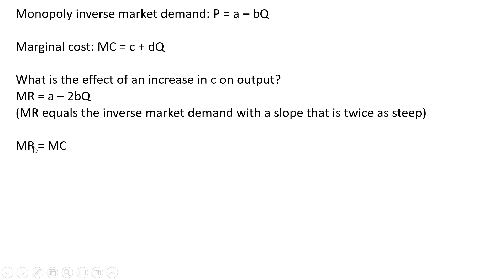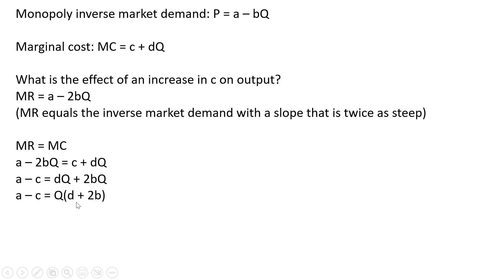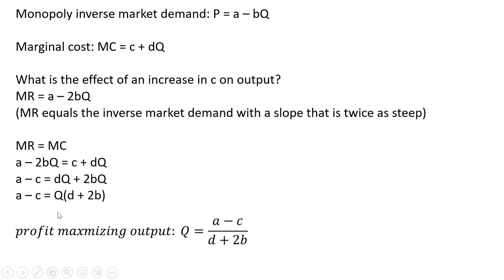Now we're going to profit maximize by setting marginal revenue equal to marginal cost, and we're going to solve for Q. Moving some things around — subtracting C from both sides and adding 2BQ to both sides. Now let's factor out a Q term on the right-hand side, and divide through by (D + 2B). That gives us our profit maximizing output. So we have the monopolist's profit maximizing output given by the following expression.